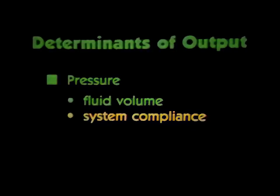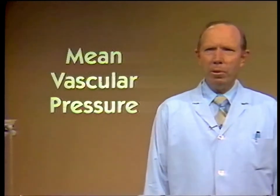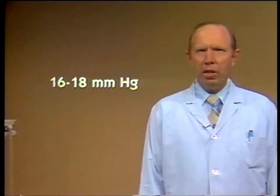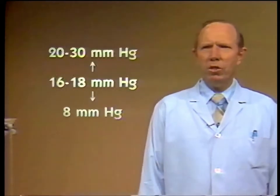So one determinant of output that we have observed thus far is the pressure in the vascular system that forces fluid into the non-sucking heart, which has two components: the fluid in the system and compliance. This pressure — which is the result of blood volume and vascular compliance — is called mean vascular pressure and was first described by Weber in 1863. Mean vascular pressure is the pressure in the vascular system with the heart stopped after pressures have equilibrated between the arteries, capillaries, and veins. Mean vascular pressure is normally between 16 and 18 millimeters of mercury above mid-heart level, but has been measured up to 20 to 30 millimeters in high output states, and as low as 6 to 8 millimeters of mercury in shock states.